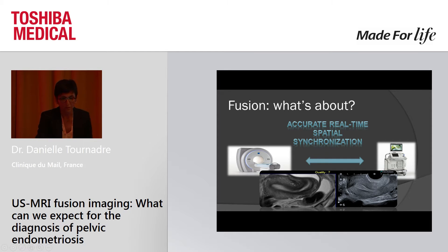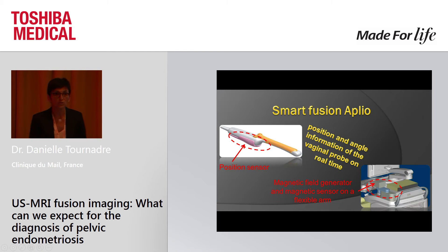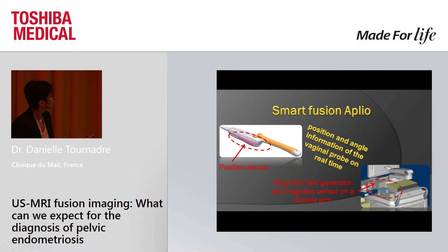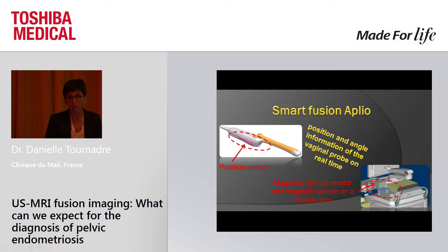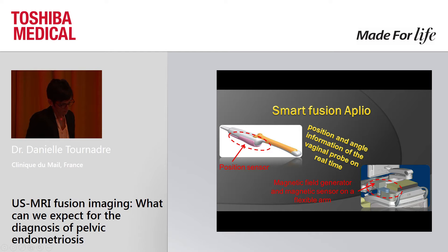Smart Fusion on Aplio 500 allows tracking of the endovaginal probe position in real-time. The probe is detected by attaching a magnetic sensor and using the transducer in a magnetic field generated by a magnet placed on a flexible arm.